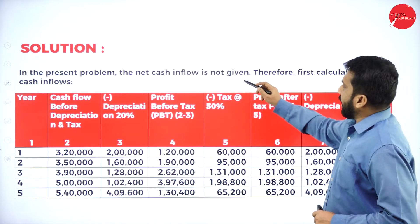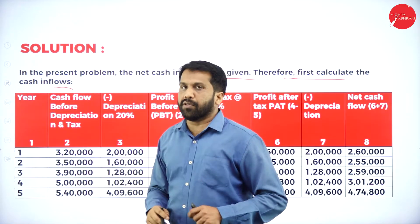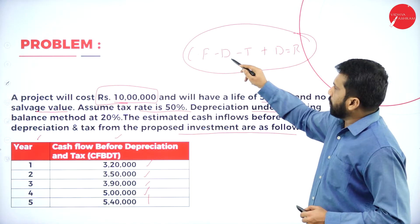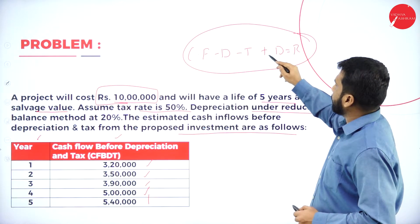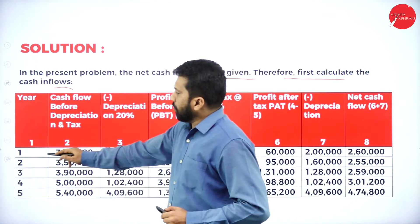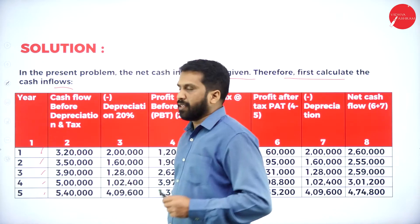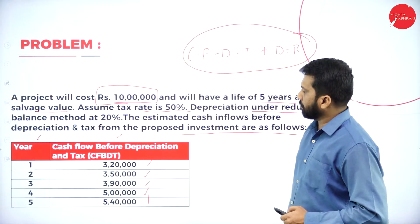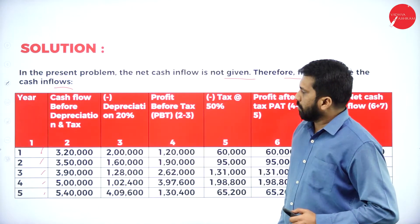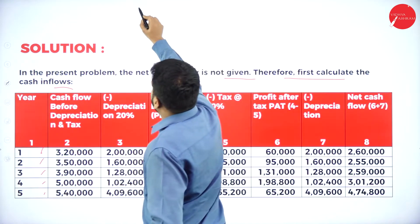In the present problem, the net cash flow is not given, therefore first calculate the cash inflow. The formula is: cash flow minus depreciation minus tax, plus depreciation, then you will get actual cash flow. Here are years one through five — these inflows are already given in the question. Now depreciation you are supposed to calculate. Your value is 10 lakh.